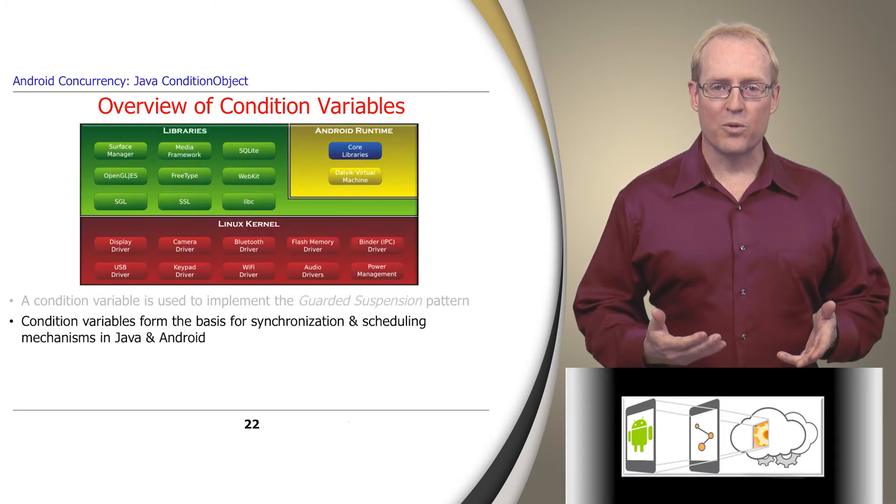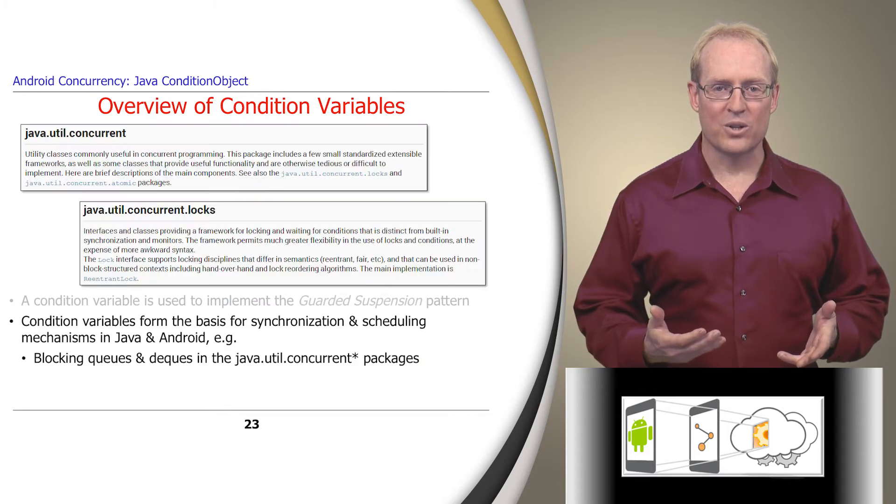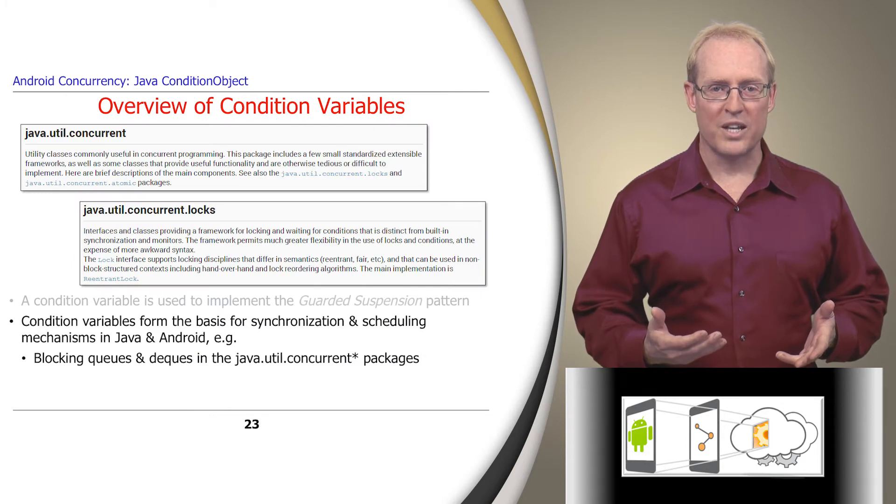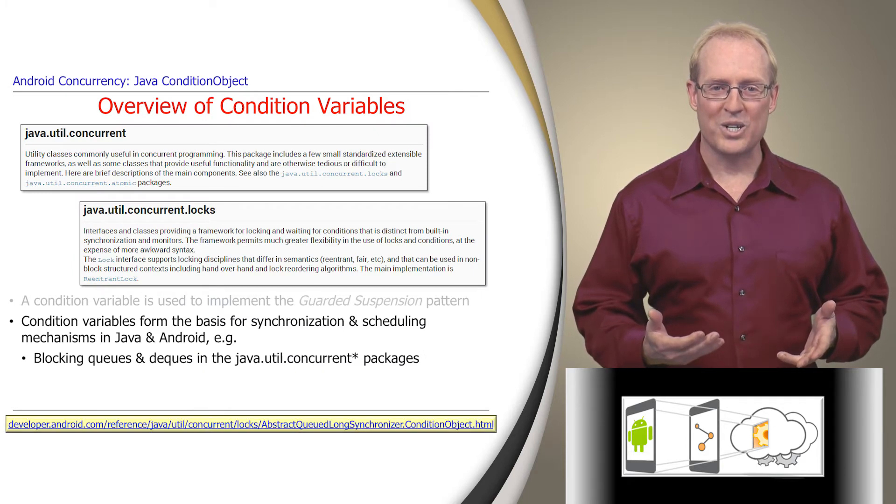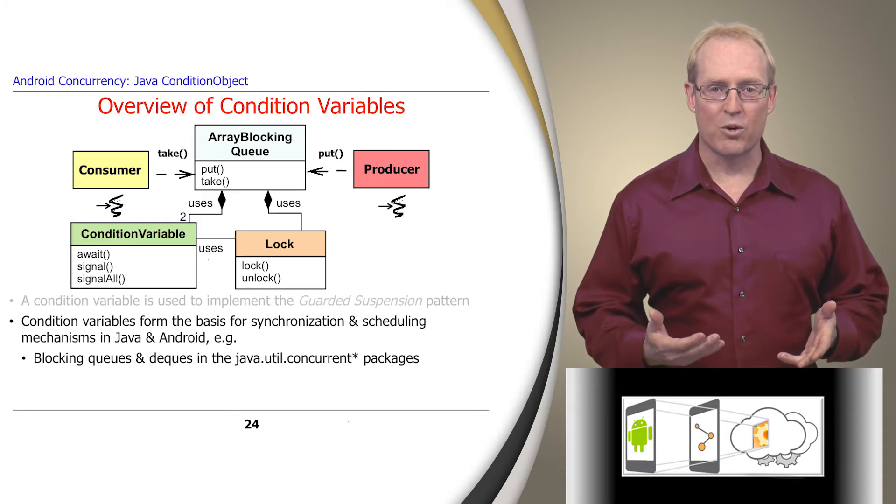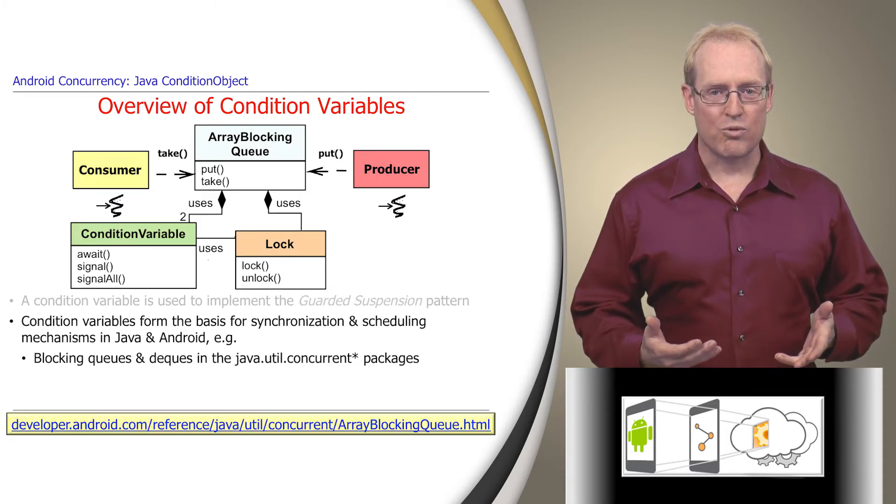Condition variables form the basis for many scheduling and synchronization mechanisms in Java and Android. For example, classes in the JavaUtilConcurrent package use Java's implementation of condition variables, called condition objects, to allow multiple threads to put and take messages from synchronized queues and decks correctly and efficiently, as shown in this diagram of the array blocking queue class.